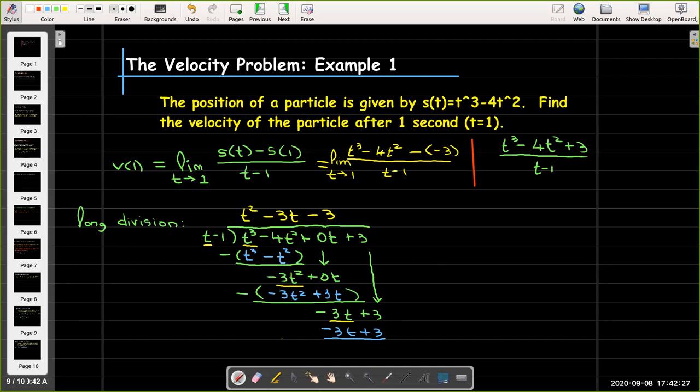All right, so now I can go back to taking the limit. So I will just have to take the limit as t approaches 1 of t squared minus 3t minus 3. And I can just use direct substitution now. So I'll have 1 minus 3 minus 3, so that would be 1 minus 6. And 1 minus 6 is negative 5. So v(1) is negative 5.